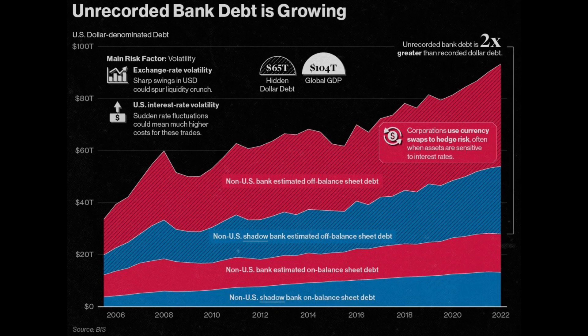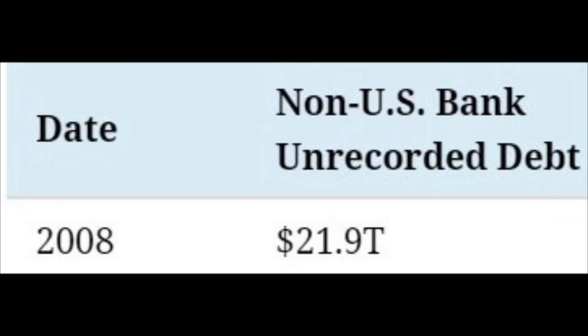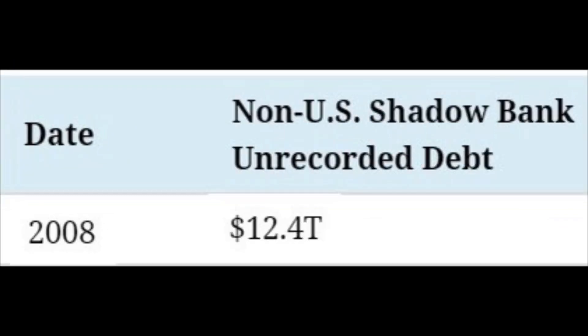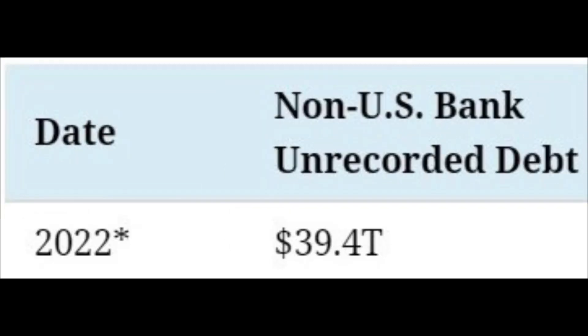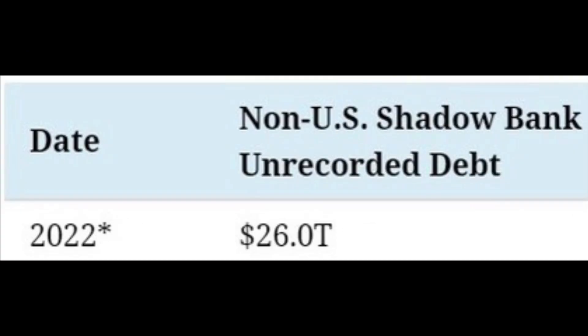Since 2008, the value of this hidden unrecorded debt has nearly doubled. In 2008, non-US bank unrecorded debt stood at just under 22 trillion dollars and shadow bank unrecorded debt at 12.4 trillion. As of 35th June 2022, non-US bank unrecorded debt stood at 39.4 trillion dollars, while non-US shadow bank unrecorded debt stood at 26 trillion dollars.